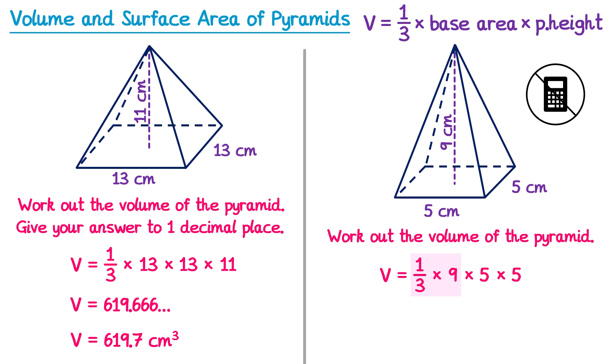9 is in the 3 times table, so to find one-third of it you just divide 9 by 3, which is 3. So this part becomes volume equals 3, and then multiplied by 5 multiplied by 5. 3 times 5 is 15, and that multiplied by 5 is 75. So the answer is 75 centimetres cubed.